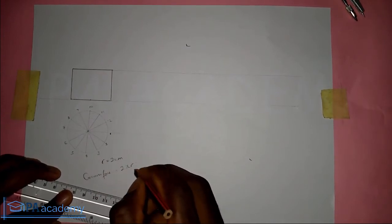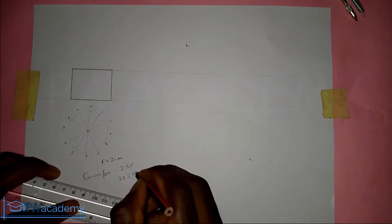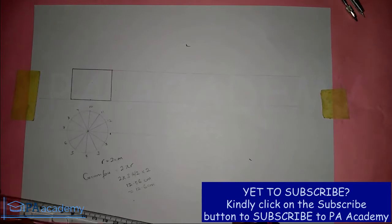Now let's do a little calculation. When drawing this circle we took the radius to be two centimeters. Don't forget the formula for the circumference of a circle is 2πr, so that would be two times pi (3.142) times our radius of two centimeters. By the time we do this we are going to have 12.56 centimeters, so let's approximate it to 12.6 centimeters.